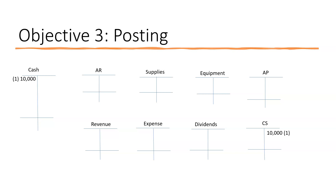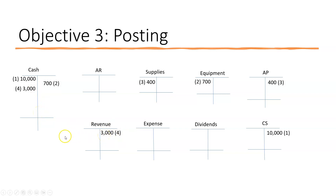Transaction two: we purchased equipment for $700 cash — we debited equipment, credited cash — posted to the ledger with equipment debit on the left side and credit cash on the right side. Transaction three: purchased supplies of $400 on account — debited supplies $400, credited accounts payable $400 — posted to the ledger. Transaction four: performed services and received $3,000 cash — debited cash, credited service revenue.